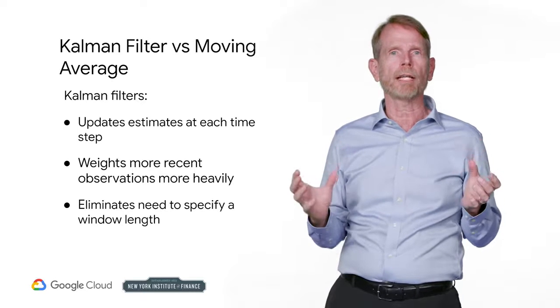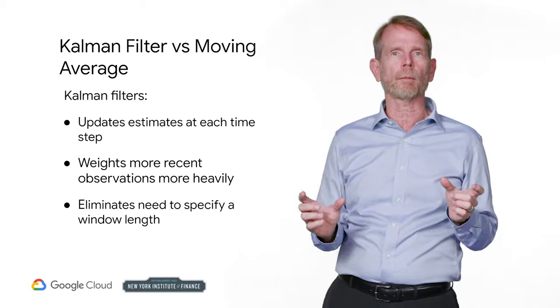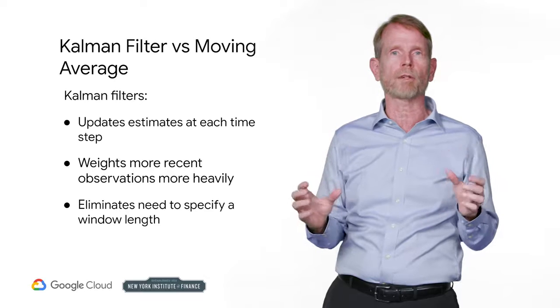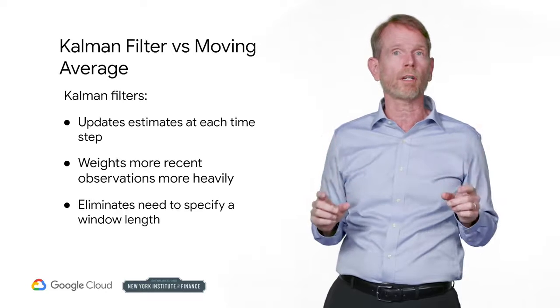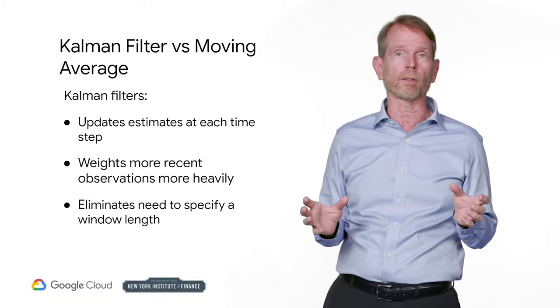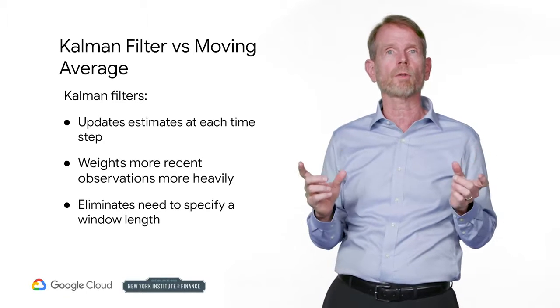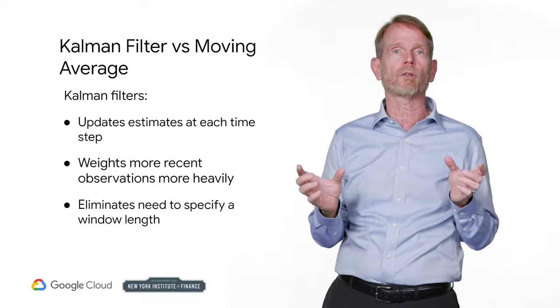The Kalman filter updates its estimates at every time step and tends to weight more recent observations more heavily than older ones. This is similar to but not the same as an exponential moving average. This provides useful estimates of rolling parameters of the data.